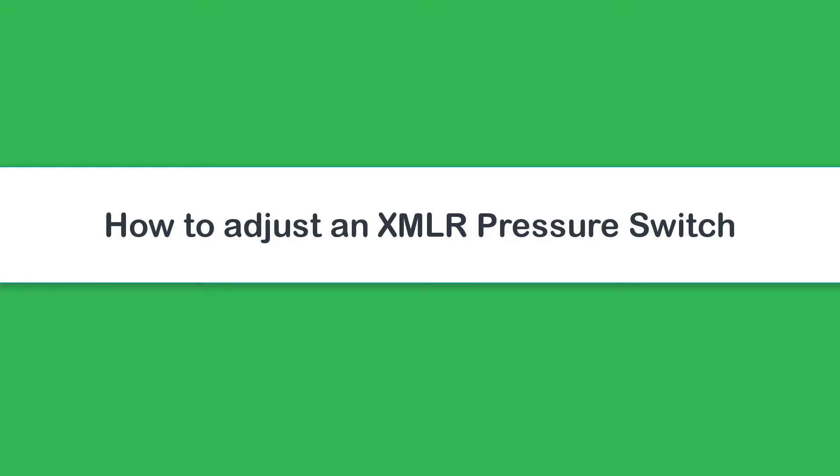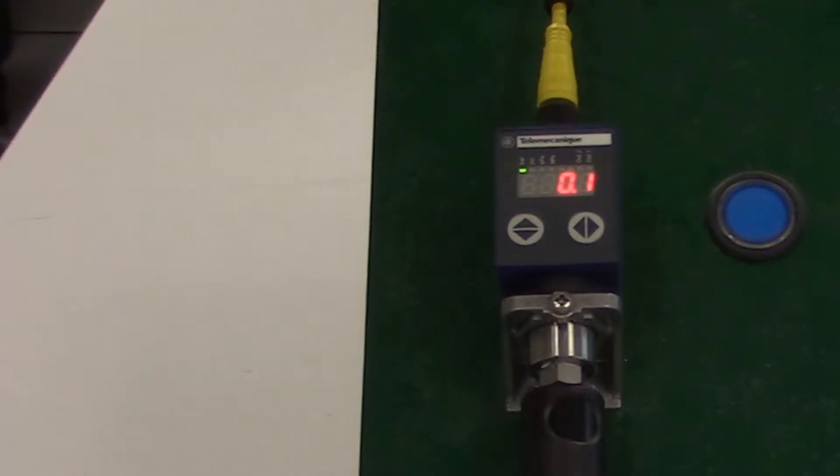How to change the sense of the output of an XLMR pressure switch from normally open to normally closed. Our XLMR pressure switch is set to hysteresis mode with a normally open contact. Our aim is to change this to hysteresis mode with a normally closed contact.